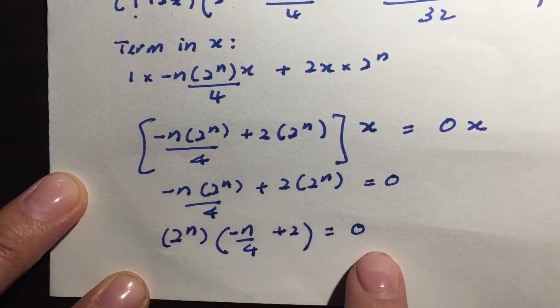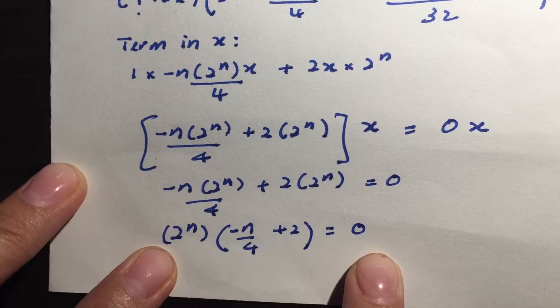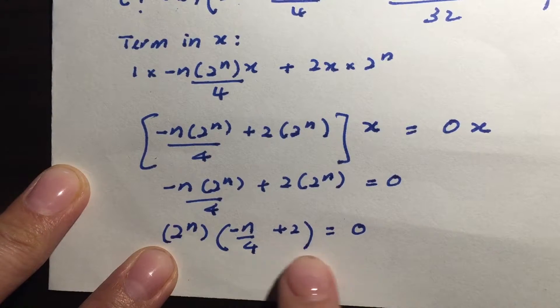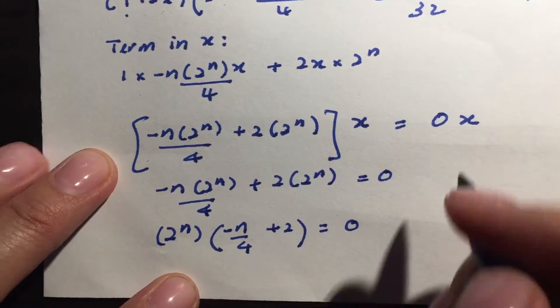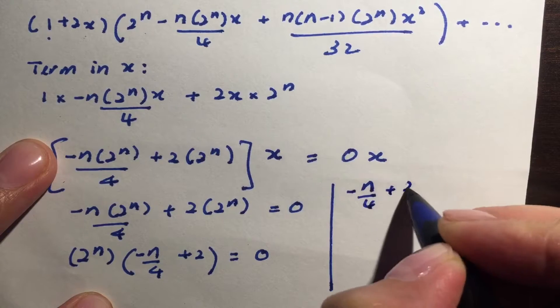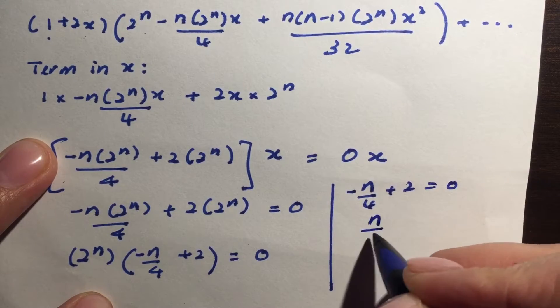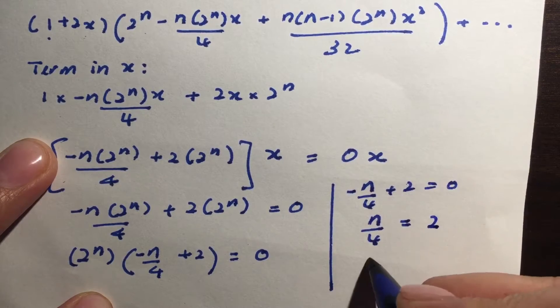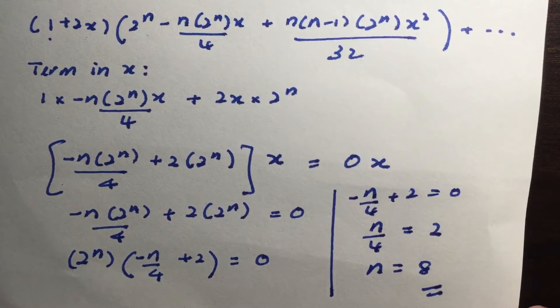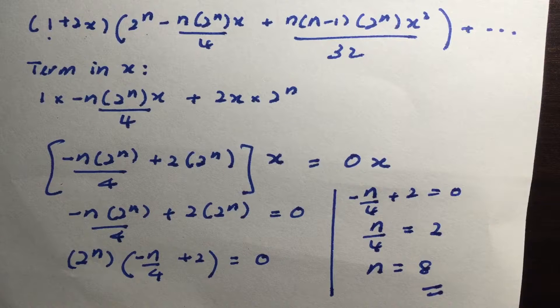So 2 to the power of n equals to 0 is not possible. You can try. There's no way for you to actually get any value. So the only one that makes sense is actually this one here. So this bracket must be equals to 0. So I can have negative n over 4 plus 2 equals to 0. n over 4 is equals to 2. So n is equals to 8. There you have it. So this is the first one that we have. n is equals to 8.